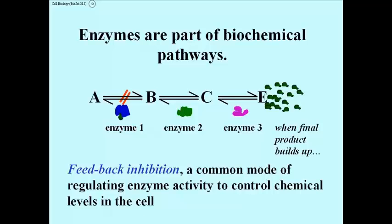When E builds up — when the final product of this pathway builds up — very characteristically some of those molecules go back and bind to an enzyme early in the pathway, changing its shape, thus inhibiting it. That's called feedback inhibition.